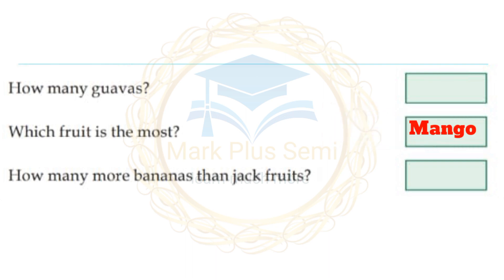How many more bananas than jackfruits? There are 9 bananas and 3 jackfruits. 9 minus 3 is equal to 6. So there are 6 more bananas.